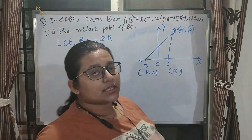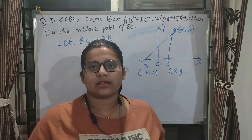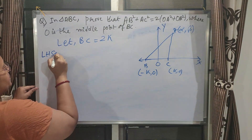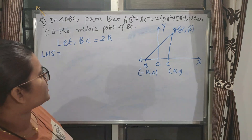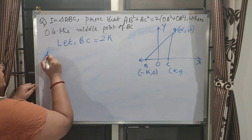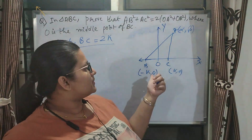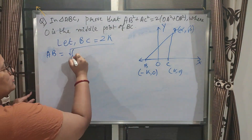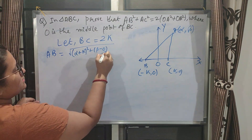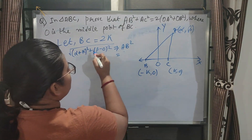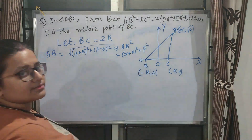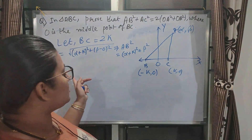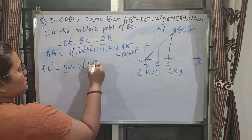Now we need to prove the expression. I will calculate the left-hand side and right-hand side separately. Using the distance formula with A = (α, β) and B = (-k, 0): AB² = (α - (-k))² + (β - 0)² = (α + k)² + β². Similarly, with C = (k, 0): AC² = (α - k)² + β².